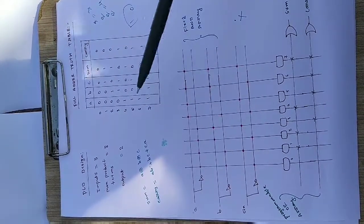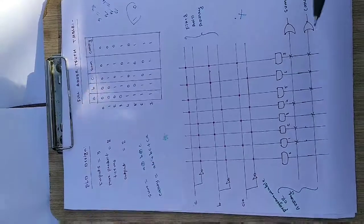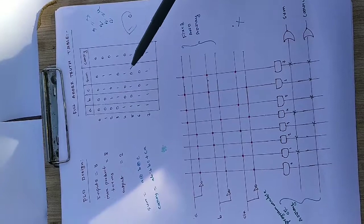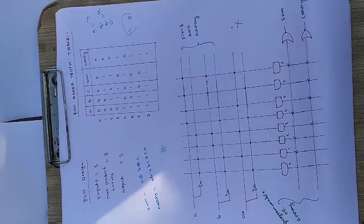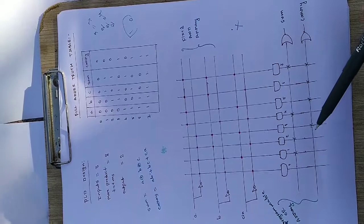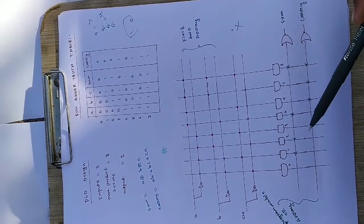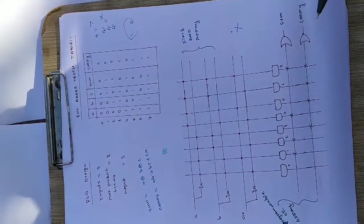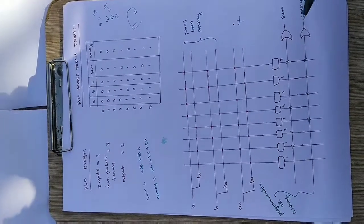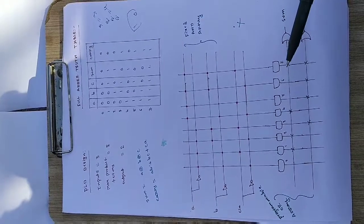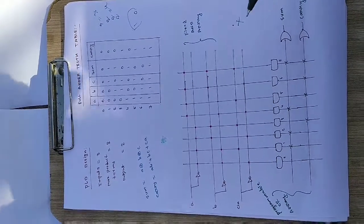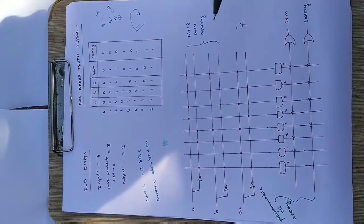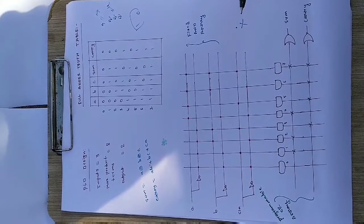For Carry, positions 3, 5, 6, and 7 are high in the truth table. So we cross (solder) at positions 3, 5, 6, and 7 on the Carry OR gate. This gives us Carry = AB + BC + CA. In this way, we can program a logic device using a fixed AND array and a programmable OR array.